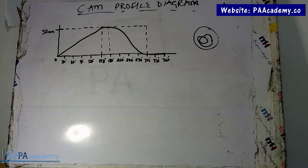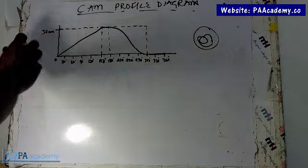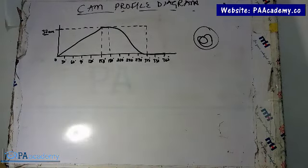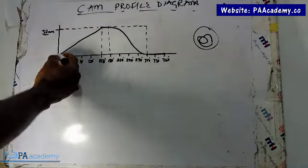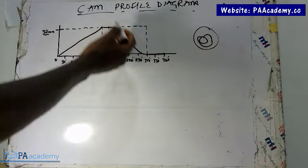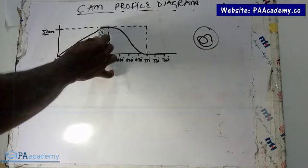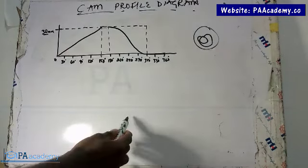What we have on the board now is a displacement diagram. Let's analyze it. For Question 5, it says: a radial cam with 20mm minimum diameter. For 150 degrees of camshaft rotation, it rises 30mm with uniform velocity. Then from that point, it drops and for another 30 degrees it dwells — that means a straight horizontal line. I've explained that in Part 1.